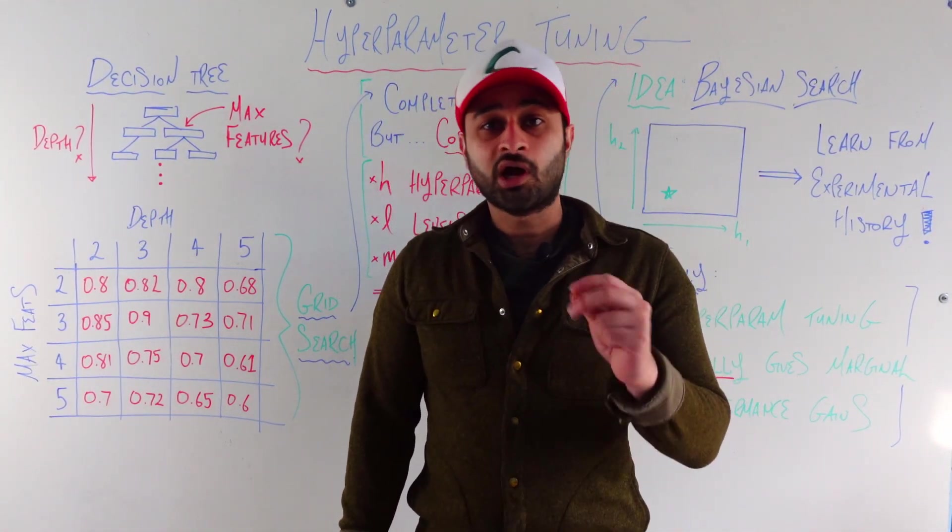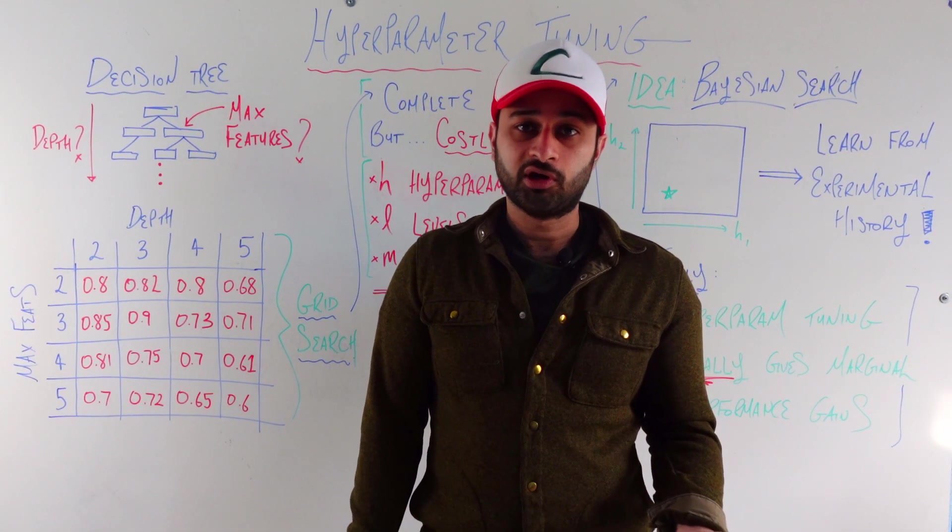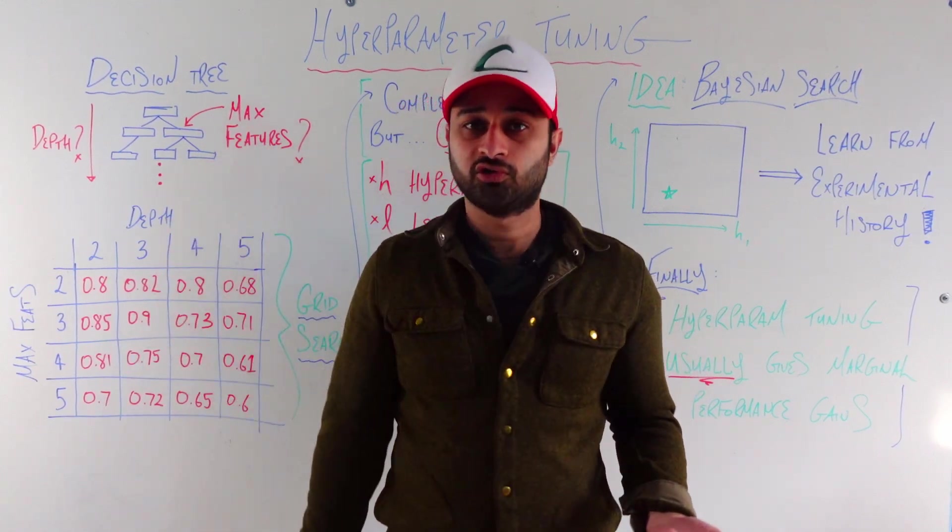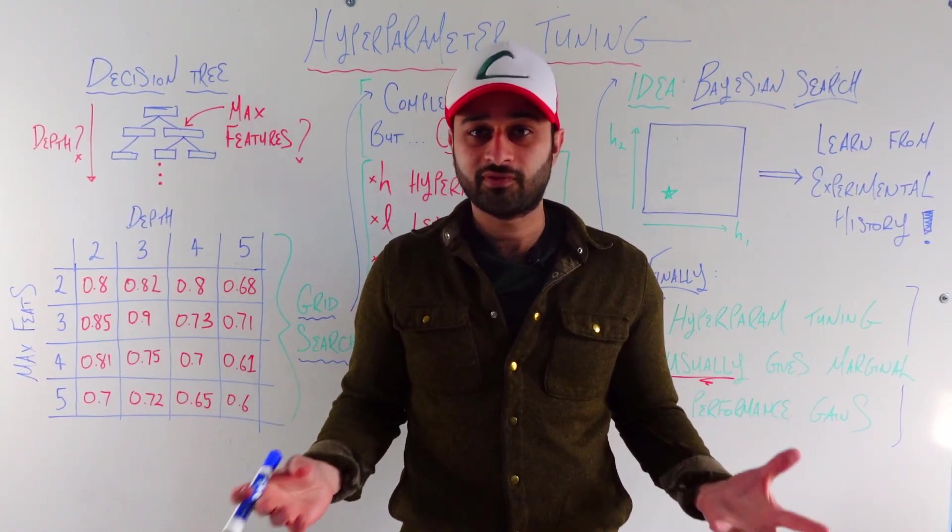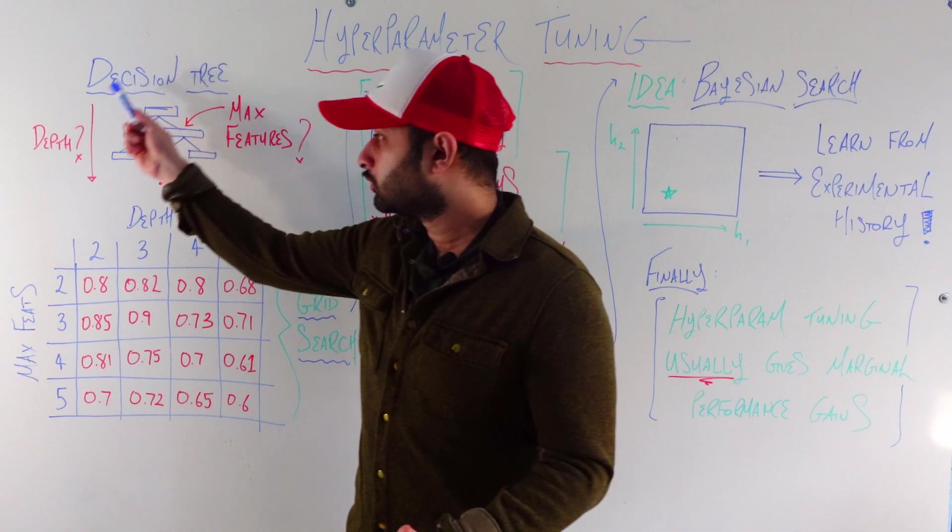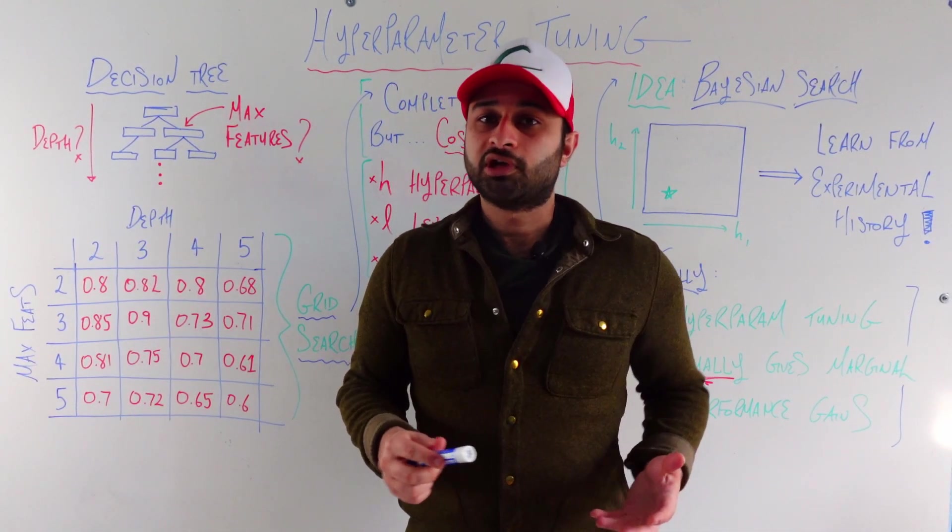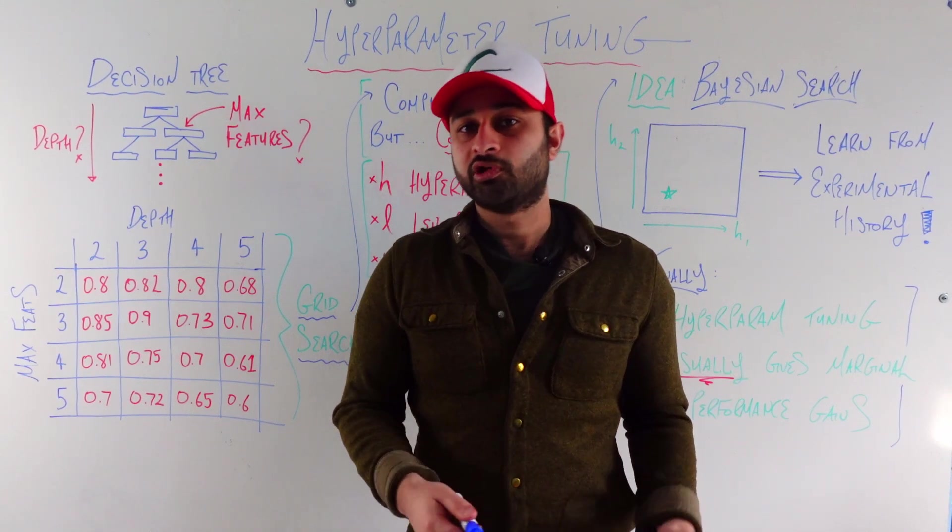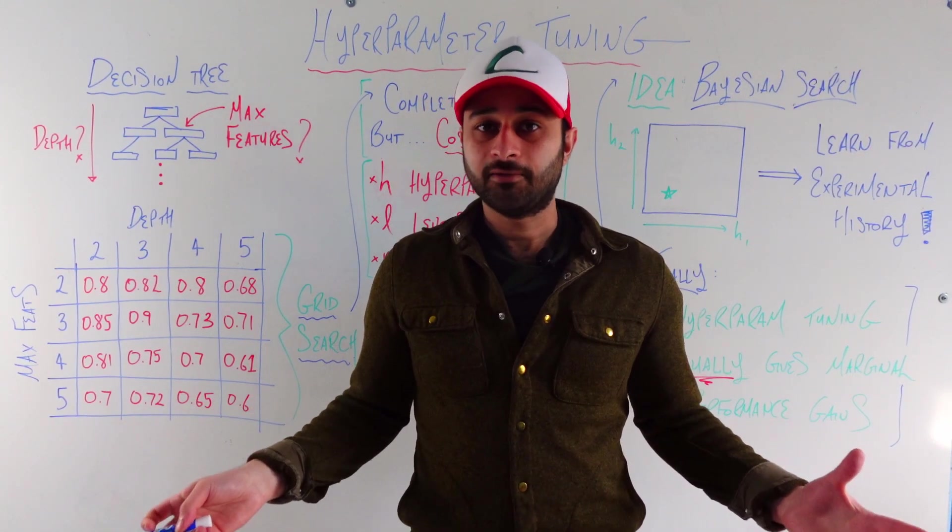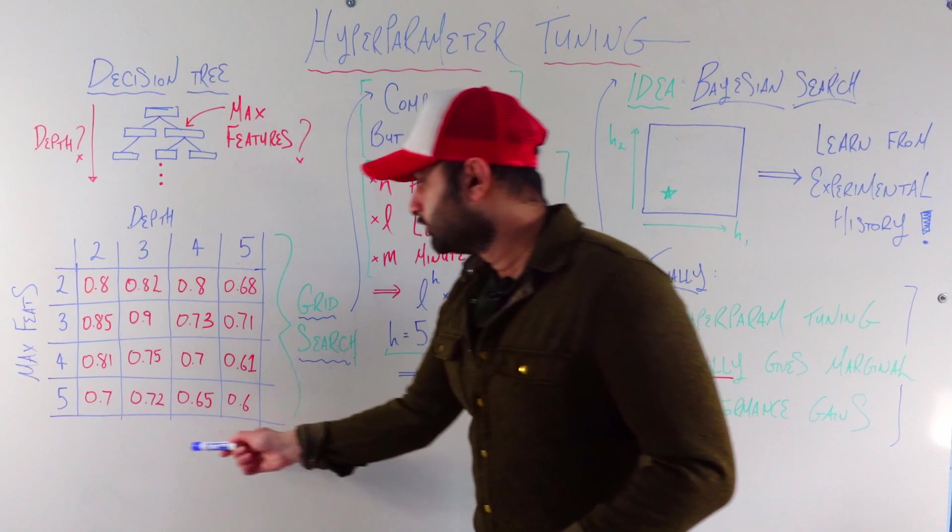And we just try every combination of these two hyperparameters. Or if you have more hyperparameters, you'll just choose every possible combination of them. You'll build a model on your training data with that set of hyperparameters. And then you'll calculate your performance metric. For example, we'll keep it simple and just say it's accuracy today. And so that's exactly what you're seeing here in these results.